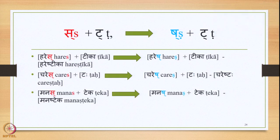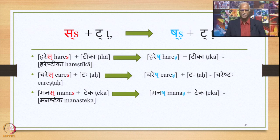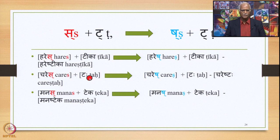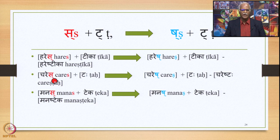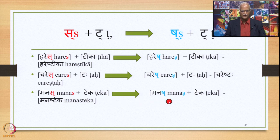Then SA followed by TA as input gives SHA followed by TA as output. We have HARIS — the Sandhi happens between two Padas, part of the sentence. We have HARIS plus TIKA, and the output is HARISH-TIKA where SHA substitutes SA, giving HARISH-TIKA. There is a sutra written by Panini: CHARISH TAHA — here SA is followed by TA, and SA is substituted by SHA, giving CHARISH TAHA. Similarly, MANAS plus TIKA: this SA will be substituted by SHA by the application of 8441, giving MANAS-TIKA.